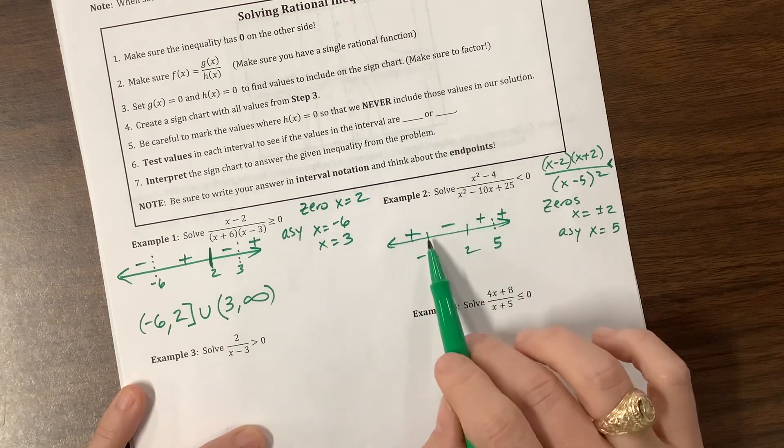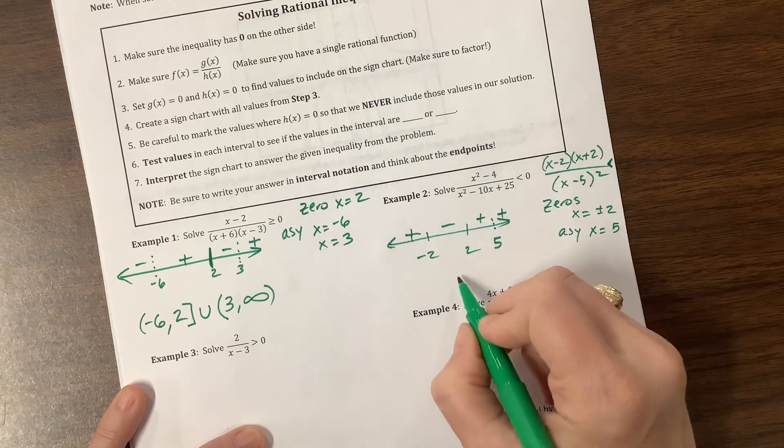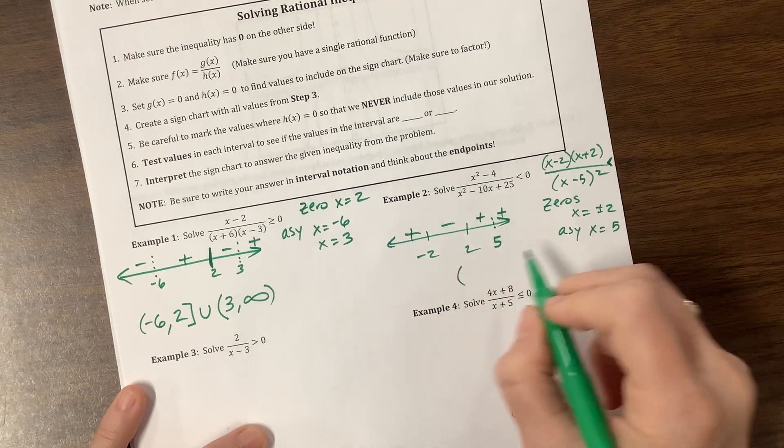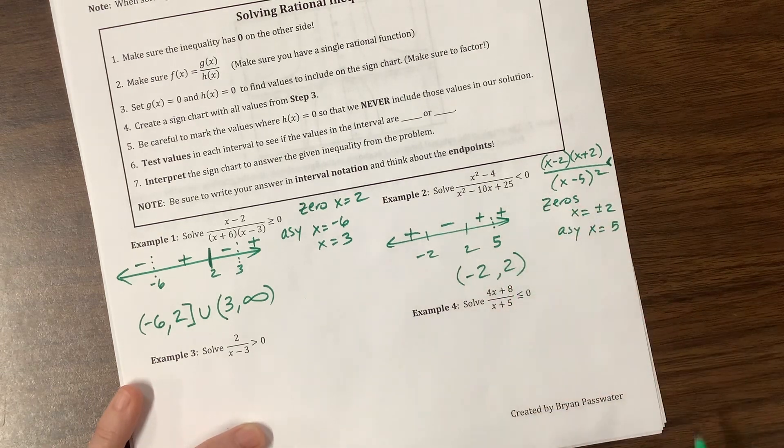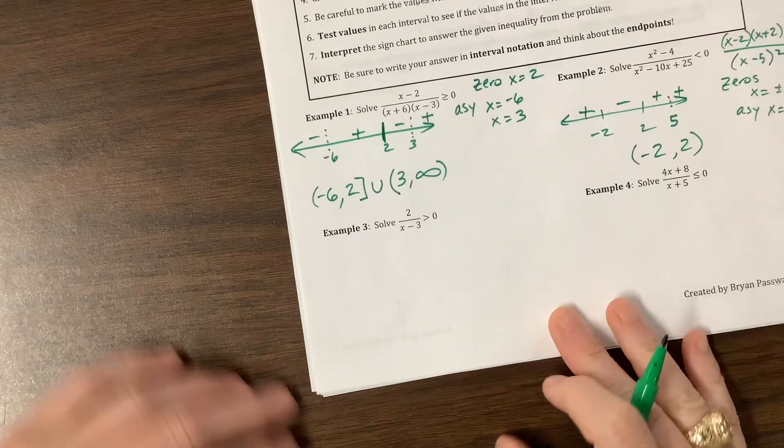We want to be less than 0, and the only place we're less than 0 is here, but we can't equal these values because they didn't give me an equal sign here. So it's from negative 2 to 2 with soft brackets.